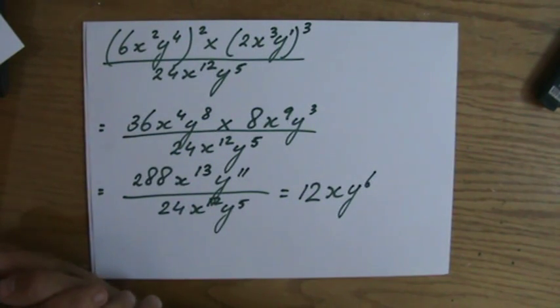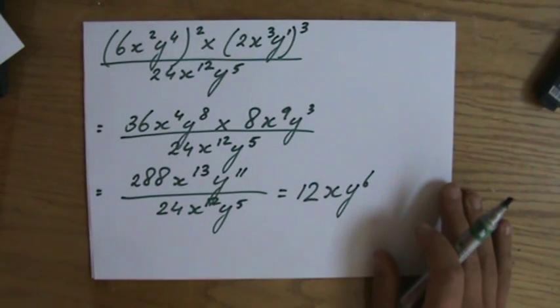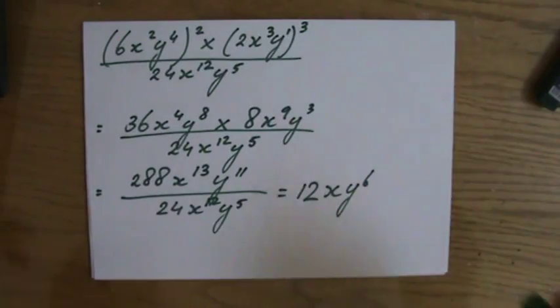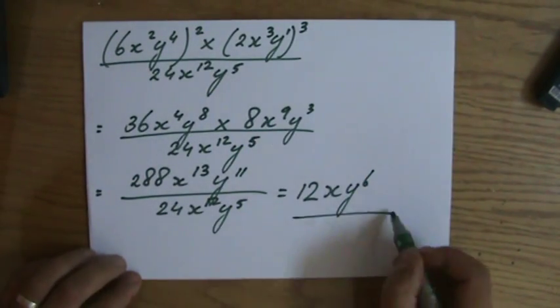But I had to rush because in about 20 seconds a bell would go off in this building, and then I would have to do this again tonight. Now I'm finished. The answer is 12x, y to the power of 6.